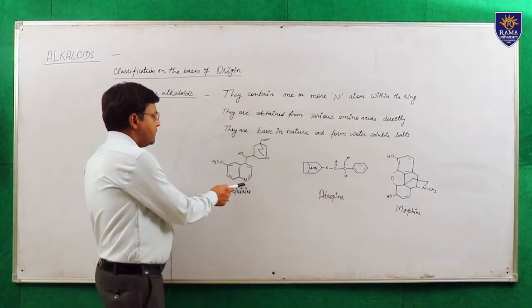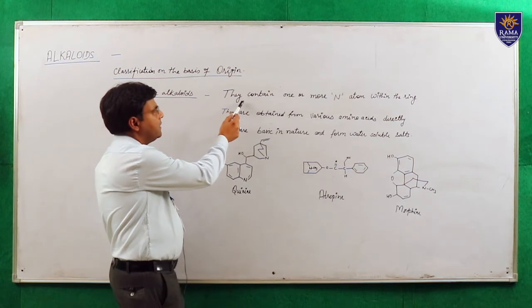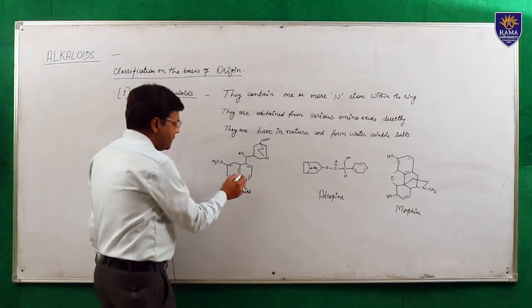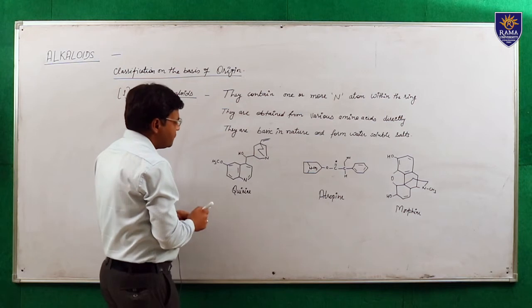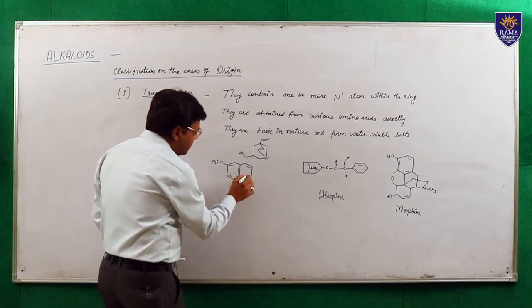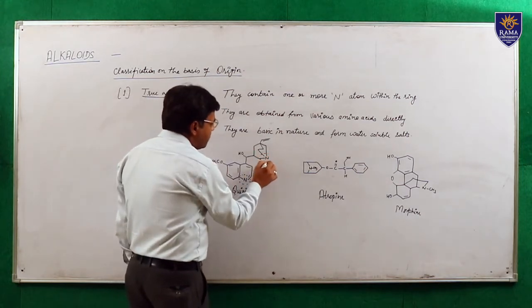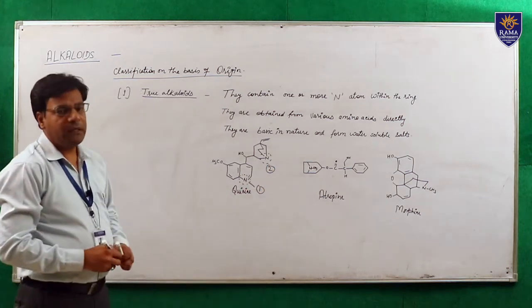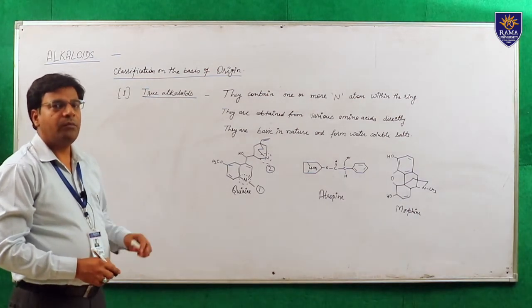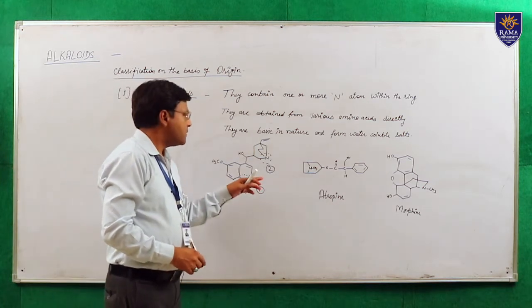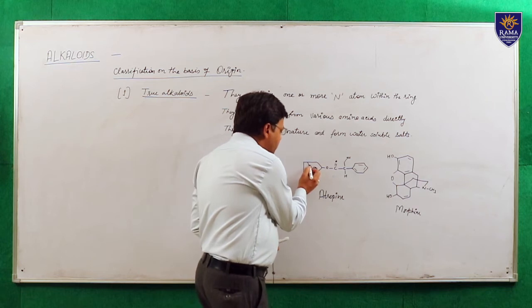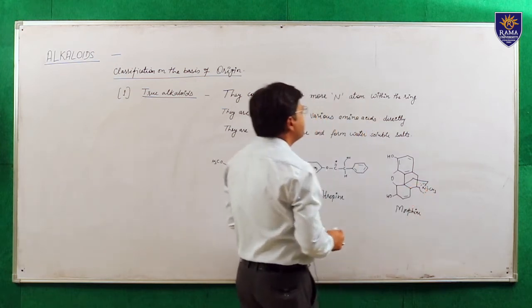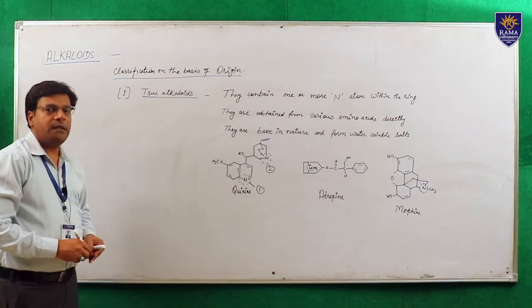As the definition indicates, true alkaloids contain one or more nitrogen atom in the ring — nitrogen is present in the ring. Here you can see nitrogen atom in the ring, and here also nitrogen atom in the ring. These alkaloids are called true alkaloids.